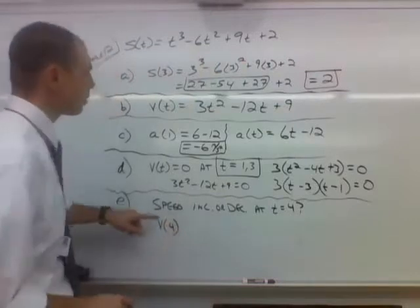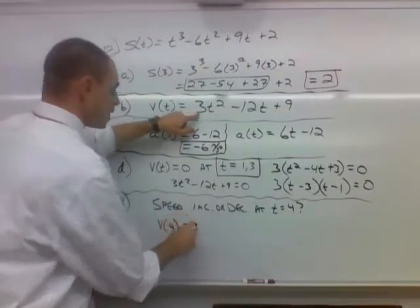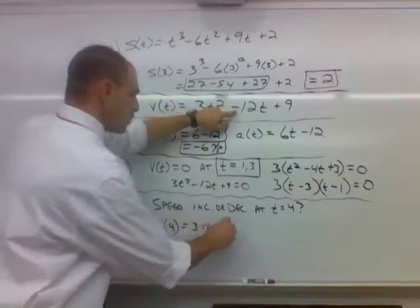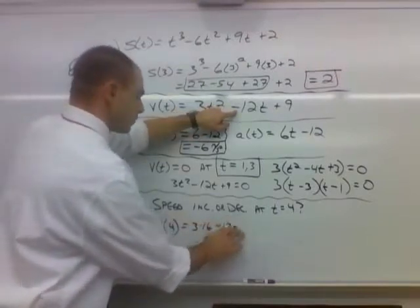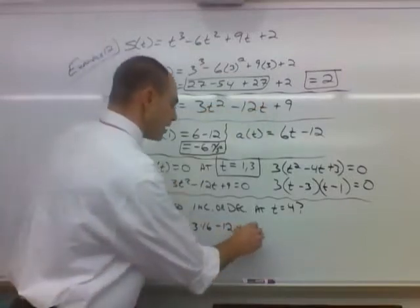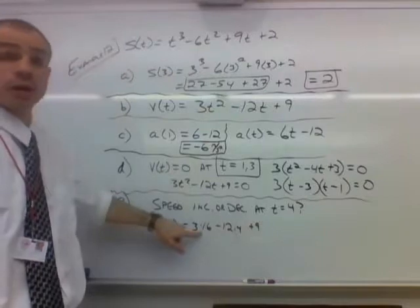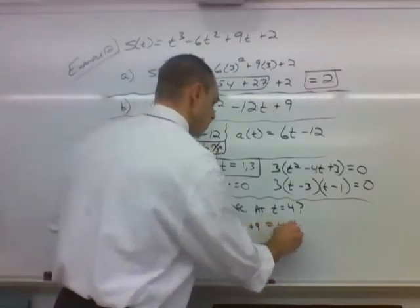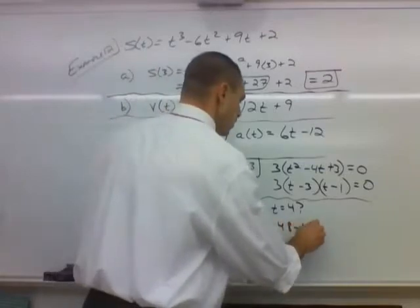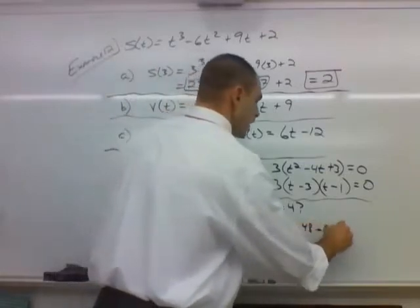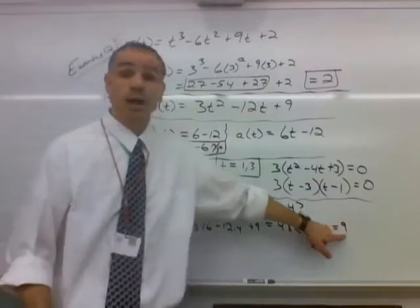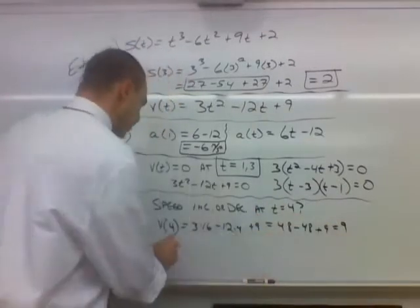So when we plug 4 into the velocity, we're going to have 3 times 4 squared, so 3 times 16 minus 12 times 4, and then plus 9. So 3 times 16 is 48. 4 times 12 is 48 plus 9. So we can see there that that's equal to 9. So our velocity at time 4 is a positive number.